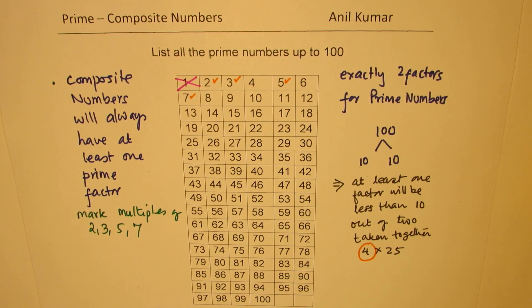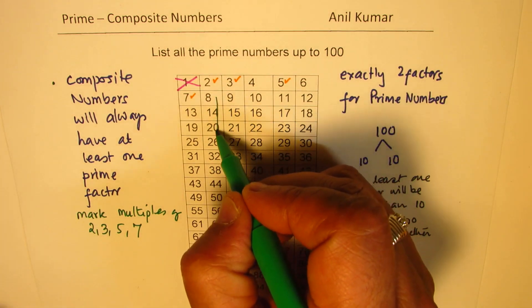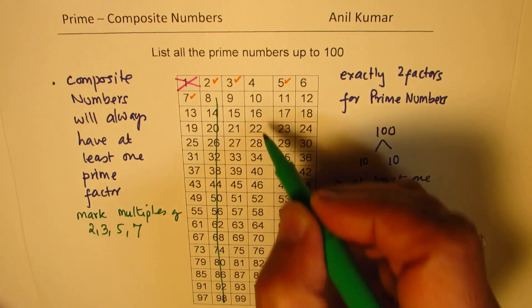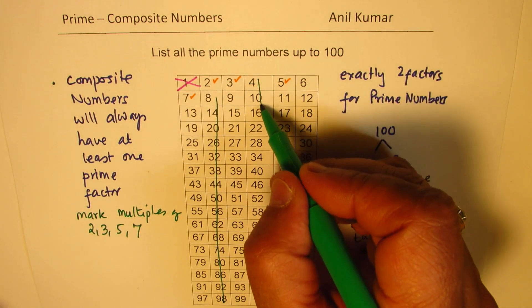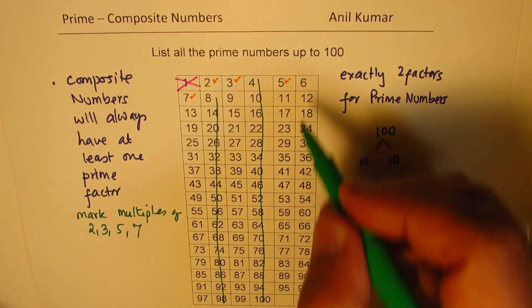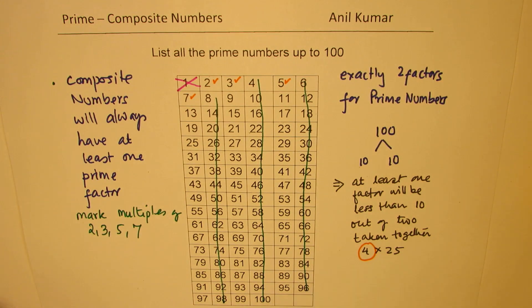So when I say mark multiples of 2, so all these numbers are even numbers, they will be cancelled. Multiples of 4 are also even numbers. They are composite numbers, and these are also composite numbers, so we can just forget about them.